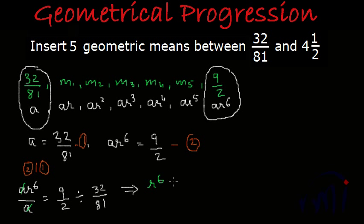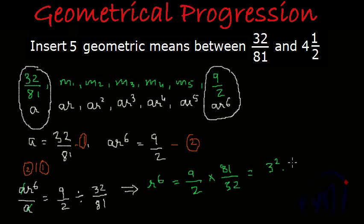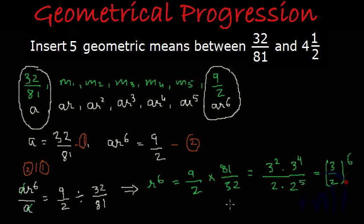From this, R⁶ = (9/2) × (81/32). Now 9 = 3², 81 = 3⁴, and 32 = 2⁵, so R⁶ = (3⁶) / (2⁶), which equals (3/2)⁶.